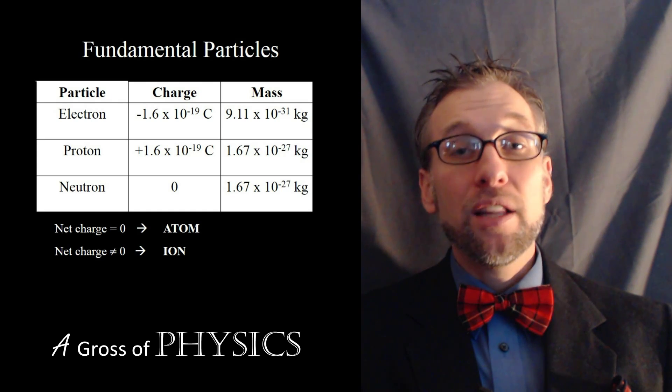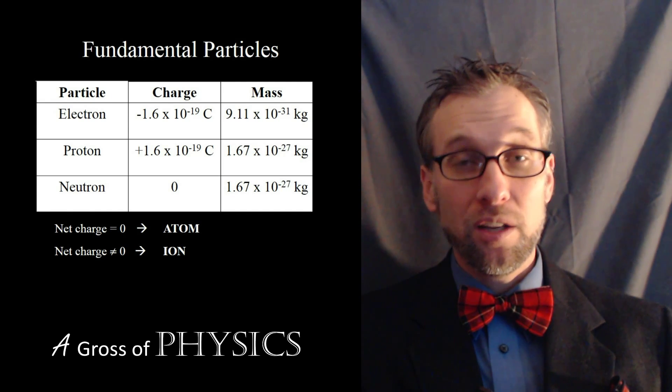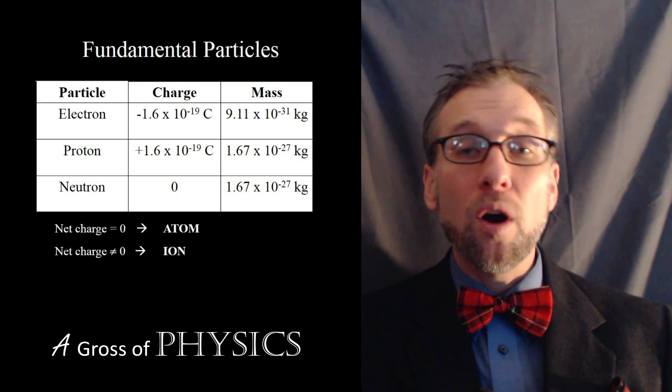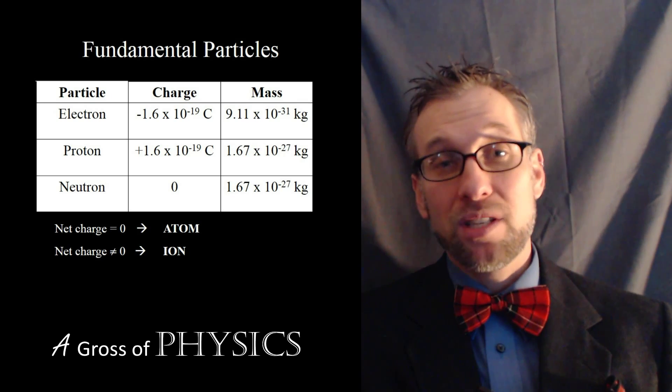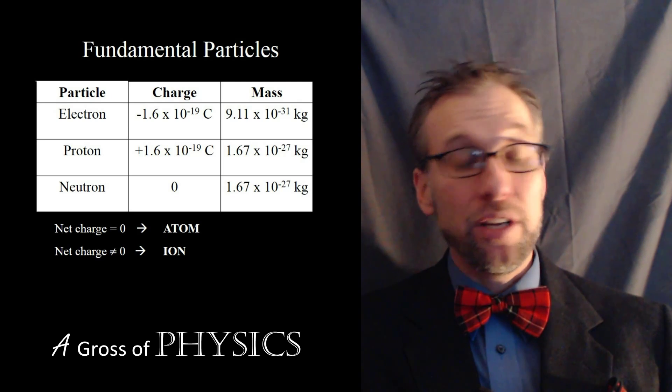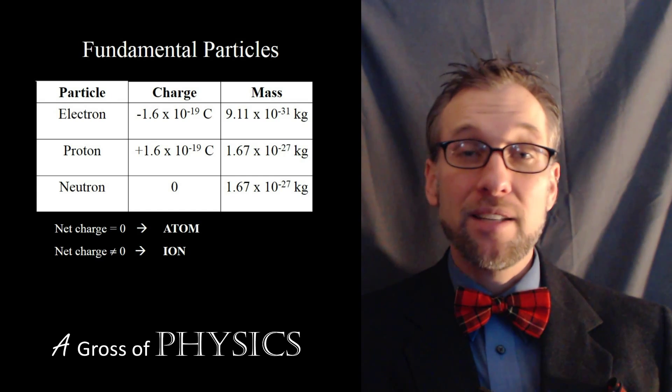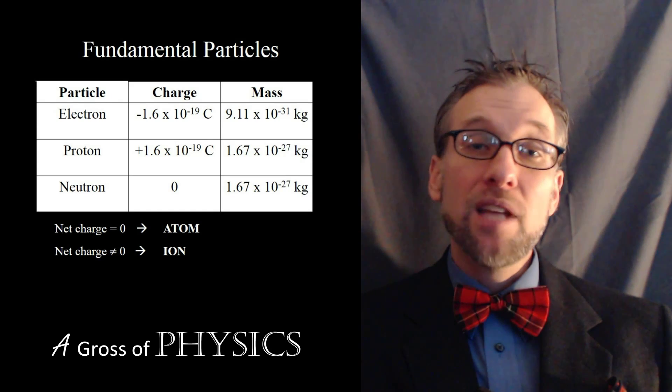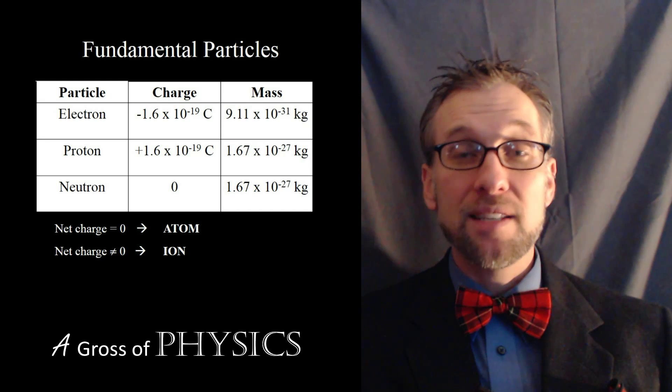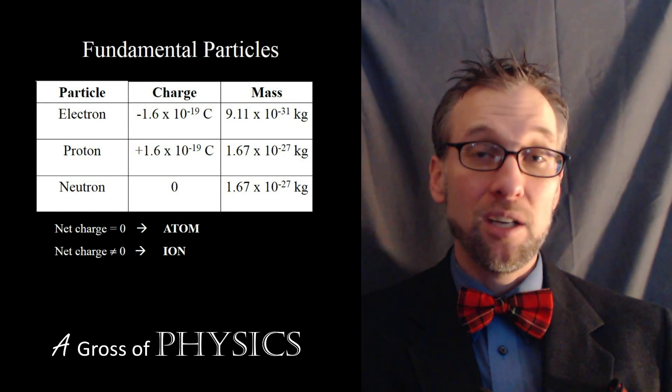Now the reality is the electron does have mass and the value is 9.11 times 10 to the negative 31 kilograms. The proton and the neutron, although very similar in mass, don't have the actual same mass. But for our purposes right now, we'll denote the mass of the proton and neutron as 1.67 times 10 to the negative 27 kilograms. Instead of using the charge as plus one and minus one, the proton has 1.6 times 10 to the negative 19 coulombs and the electron has negative 1.6 times 10 to the negative 19 coulombs.